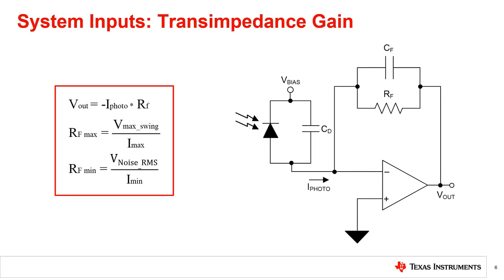Let's start with determining the transimpedance gain, or the feedback impedance, of the TIA circuit. Determining the correct output range for your application before choosing an amplifier will help avoid saturating the amplifier and save time when it comes to designing your TIA circuit.